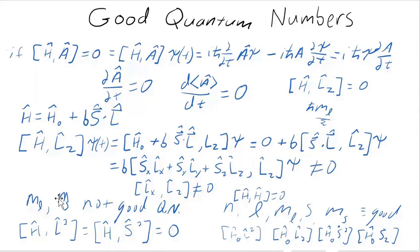So since M sub L and M sub S are not good quantum numbers when you turn on this perturbation, I would like to find replacements for them in the event that that perturbation is present. And that we're actually going to use that perturbation next time. It's called spin orbit coupling.